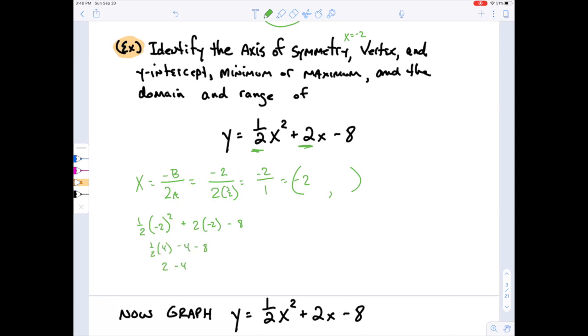That's going to give me 2 minus 4 minus 8. Negative 2 minus 8 is negative 10, so that goes here. And now my vertex is done. So negative 2, negative 10.